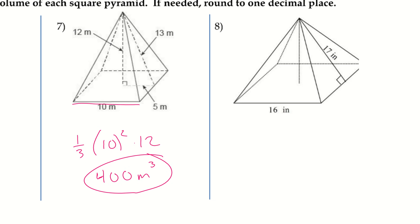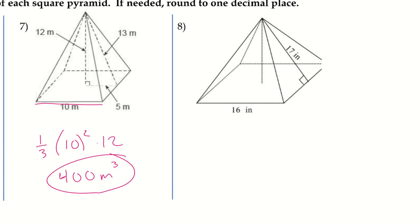All right, let's try one more together, and then I'll let you try the next few. All right, so I have one-third times the area of the base, so 16 squared, and then we want to multiply by the height. So, as we can see here, half of this will be eight, right?